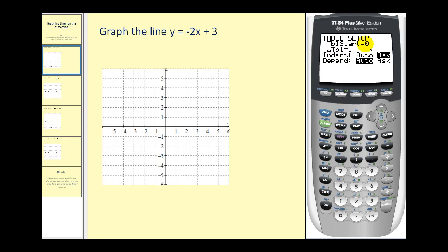We're going to start the table at zero. The change in the table will be by one, so that's good. We want to make sure that the independent variable here is on automatic. So we're going to highlight automatic and then press enter. Now we're ready to go to the table. Notice that right above the graph button there's table written in blue. So to access the table we have to press second graph.